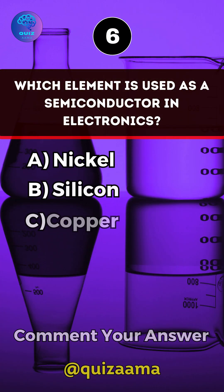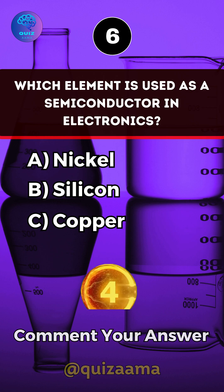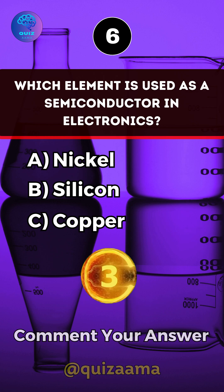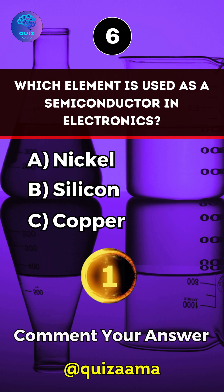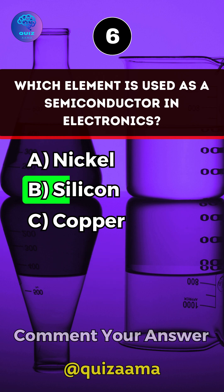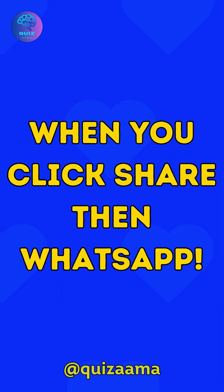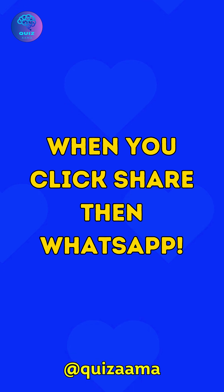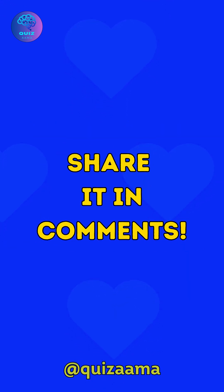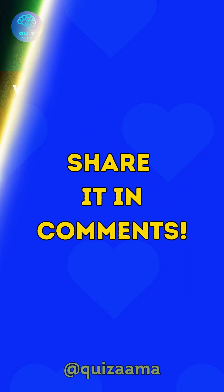Which element is used as a semiconductor in electronics? Answer B: Silicon. Who is the second person when you click share then WhatsApp — share it in the comments!